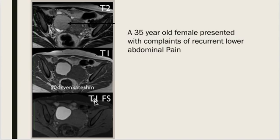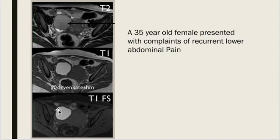Coming to the T1 fat saturation image, you can see the abdominal fat is suppressed. The peritoneal fat and omental fat are suppressed, and the lesion still looks bright, indicating that it contains a blood product. So based on the T2, T1 fat saturation, and T1 weighted characteristics, this is a classic case of endometrioma.